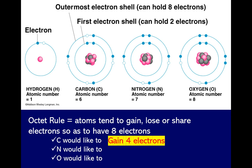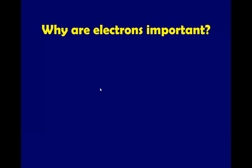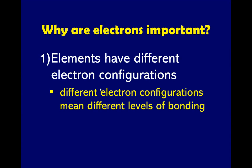Nitrogen has five electrons on its outermost shell, so it requires three electrons to become stable. Oxygen has an atomic number of eight — two are in the first shell and six are in the second shell, so oxygen requires two electrons to become stable.